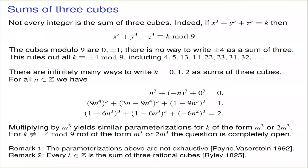These parameterizations are not exhaustive — there are representations of 1 and 2 as sums of three cubes that don't necessarily come from these parameterizations. The rational question is easier: it was known as early as 1825 that every integer can be represented as a sum of three rational cubes. We can restrict our attention to positive integers; if k were negative, we could just replace x, y, and z by their negatives and get a solution for the positive value of k. So from now on, k is a positive integer that's not ±4 mod 9 and not of the form m³ or 2m³.